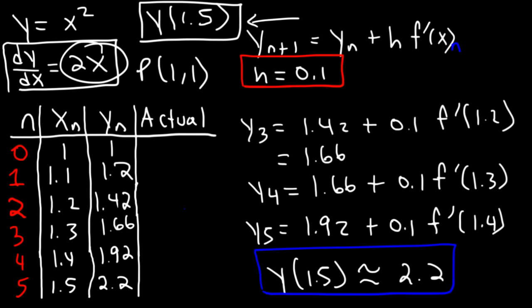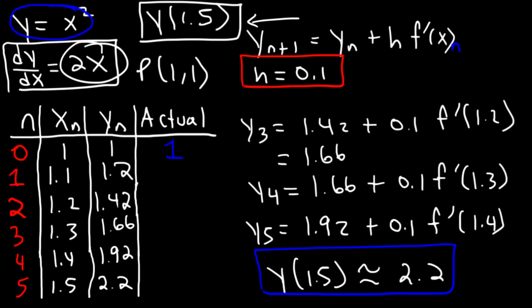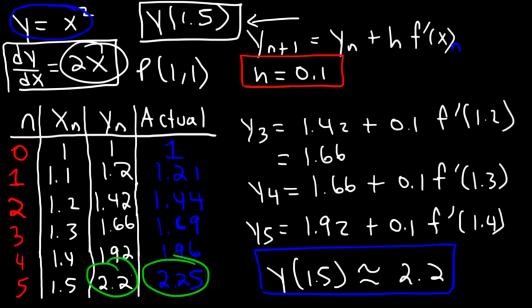Now let's find out what the exact answer is for each of these points using the original function y equals x squared. When x is 1: 1.00. When x is 1.1: 1.21, very close to 1.2. When x is 1.2: 1.44. When x is 1.3: 1.69 — it's beginning to deviate from the actual answer, but still close. 1.4 squared is 1.96, and 1.5 squared is 2.25. So the exact answer is 2.25, and our estimate of 2.2 is close enough. Euler's method is a very good approximation.